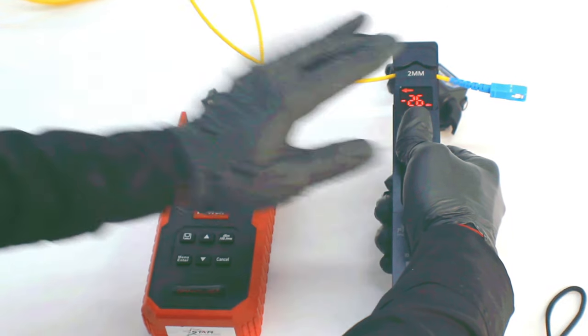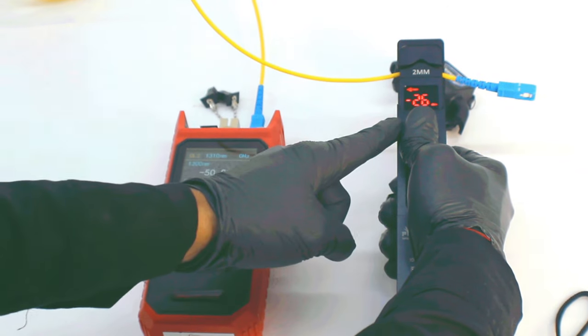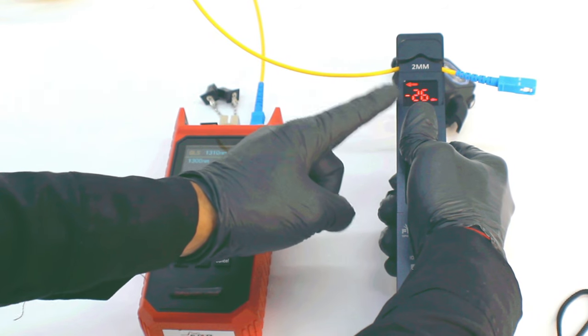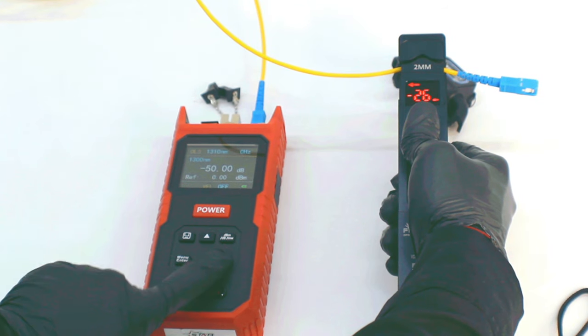As you can see, the direction comes from the left side. So it is showing the direction of the signal with the power of minus 26.